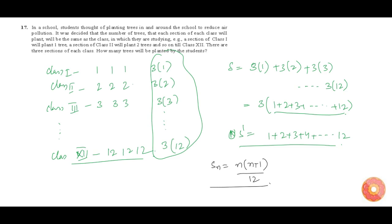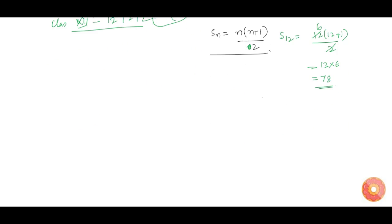Now S_12 is nothing but 12 into (12 plus 1) by 2. This is 12 into 13 by 2, which simplifies to 6 into 13, which is 78.